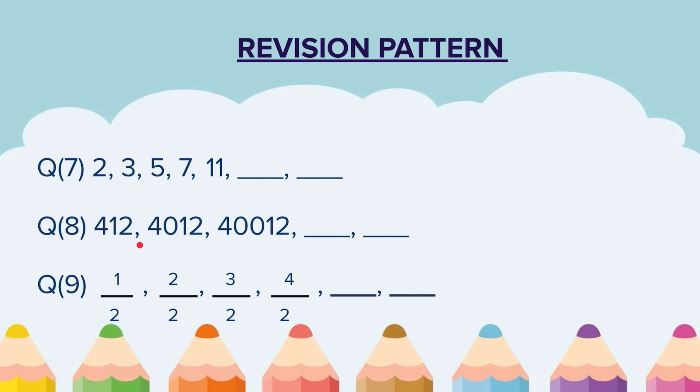Question 8. The next number is: 4, 0, 1, 2. The number after that is: 4, 0, 0, 1, 2. You have to write the next two numbers.